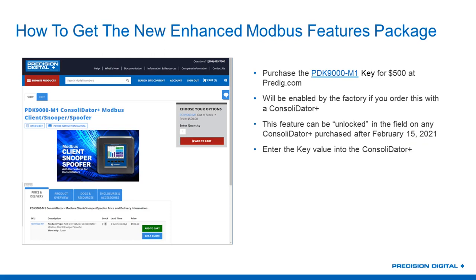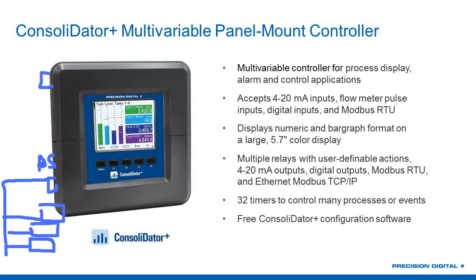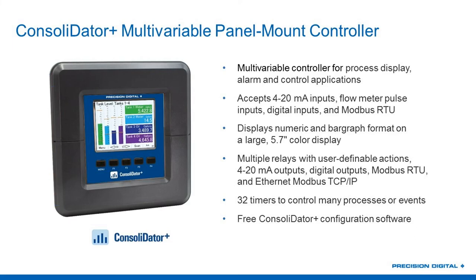Steve asks: can the Modbus server registers be mapped to TCP/IP? They cannot — all of these advanced features are only available on the RS-485 bus. That's great in that you can have the RS-485 bus doing all kinds of Modbus things as a master, spoofer, or snooper, while also having your Ethernet Modbus connected up pulling data into the company ERP system via the cloud. However, you can't plug in only Ethernet and have it start snooping through the Ethernet port. All the features discussed today are only available on the RS-485 connection, but you can also have the Consolidator Plus respond as a server to a client connecting via Modbus TCP/IP.